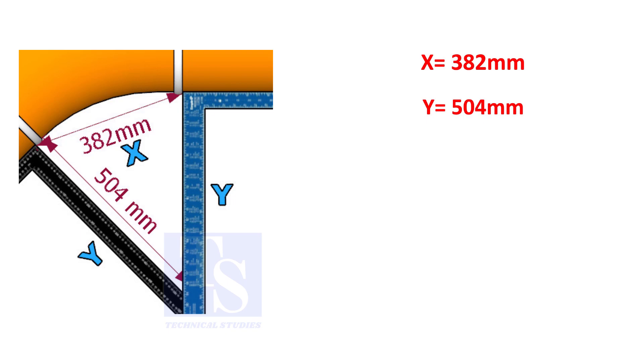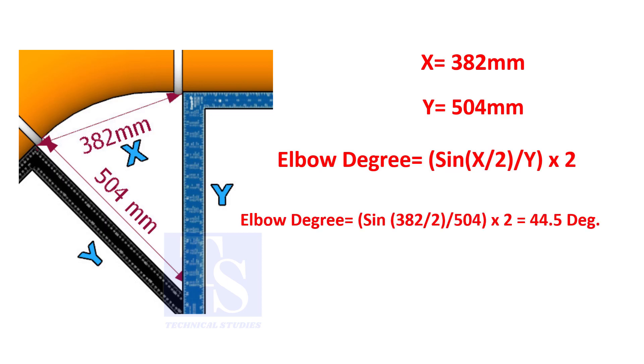Assume that the value of X is 382 and the value of Y is 504. Divide the half value of 382 by 504 and convert the value to sine. Then multiply by 2.